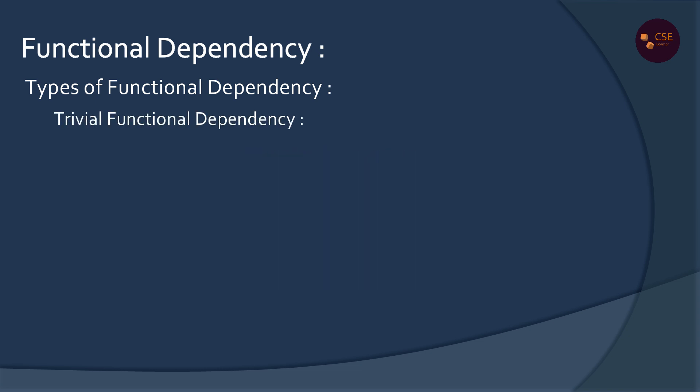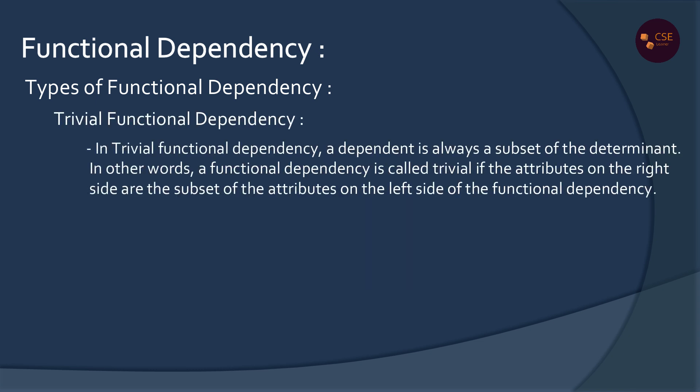First, Trivial Functional Dependencies. When the dependent attribute is a subset of the determinant attribute, that is a Trivial Functional Dependency. Simply said, if the right side attributes are also present on the left side, that is Trivial Functional Dependency.